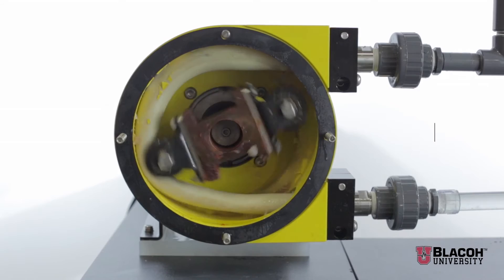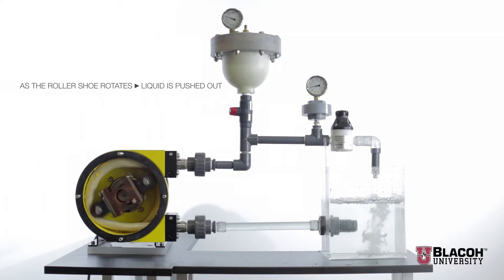At the pump inlet, a roller shoe squeezes the hose, trapping liquid in the tube ahead of it. As the roller shoe rotates, the liquid is pushed out of the pump's discharge.